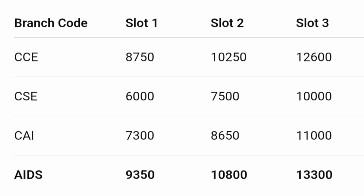The next branch that will fill up is Computer and Communication Engineering. In slab 1 you can expect under rank 8,750 approximately, slab 2 around rank 10,000, and slab 3 around rank 12,600. So you are available at more than 12,000 ranks, which is good news for AP campus.